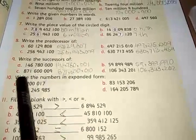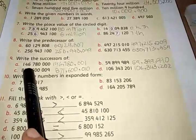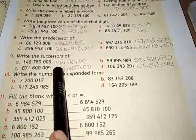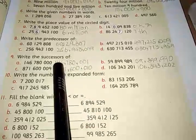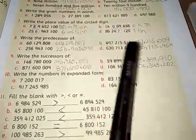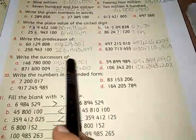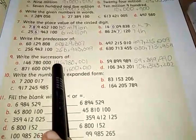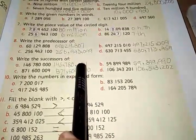The first number is 146,780,000. Now we have to write its successor, and its successor is 146,780,001.